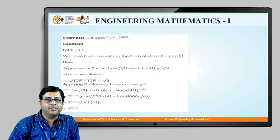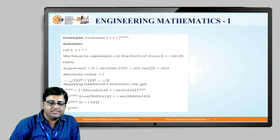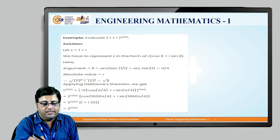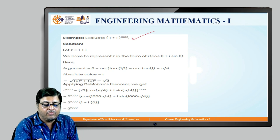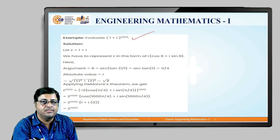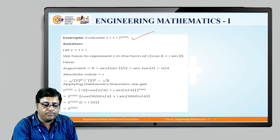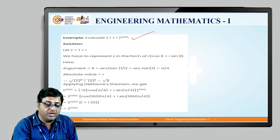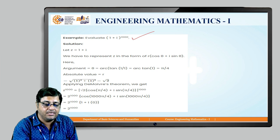In the first example, evaluate (1 + i) raised to 1000. You can see clearly 1 + i is the complex number. First we have to convert it into polar form. So how to convert it into polar form? Find out r — r is the square root of 1 squared plus 1 squared, which is equal to √2.